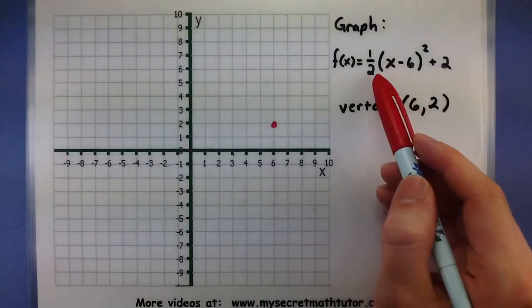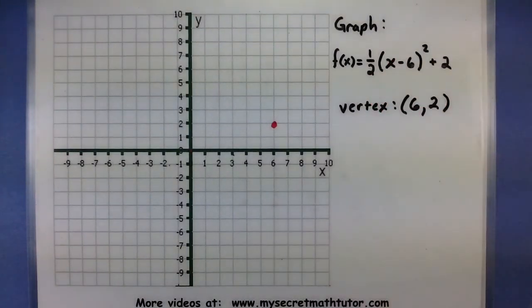Alright. Now let's look at the number up front. It looks like it's a 1 half. So the absolute value of 1 half is 1 half. It's between 0 and 1, so that's our clue that this has been shrunk.